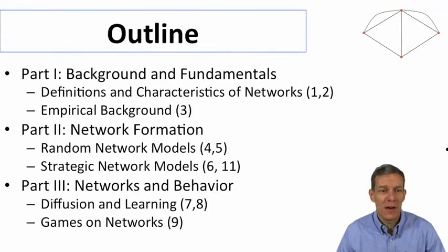In terms of a basic outline of the course, it's going to break into three parts. The first part is going to be background and fundamentals: definitions, how do we analyze networks, what are some basic properties of networks, characteristics. Along with this will be empirical background. The second part of the course and the central part is going to be network formation models. We'll look at random graph models and then we'll also look at strategic formation models when people are actually making choices.